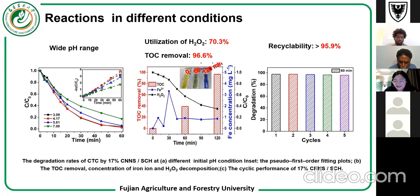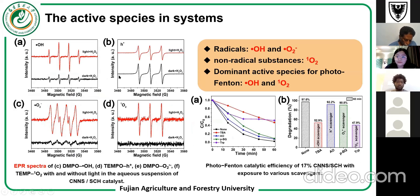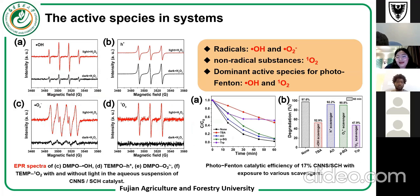We also studied the stability and reusability of our materials. After five cycles of usage, the material retains more than 55% of its activity. ESR measurements were used to identify the active species in our system and their contribution to CTC degradation. Using various scavengers, we found that hydroxyl radicals and singlet oxygen are the main active species in our photo-Fenton system.